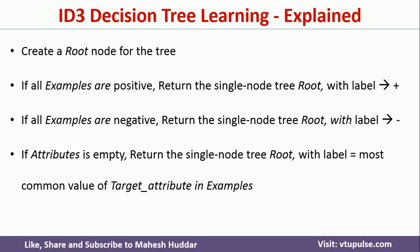Once you pass these parameters, the first thing that happens is the ID3 algorithm will create a node for that particular tree. It will not assign anything to it yet, but it will create a node. Because it is a recursive algorithm, we need termination conditions. The first termination condition is: if all examples are positive, the algorithm will return the root with a positive label — yes will be assigned.